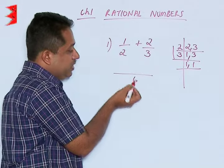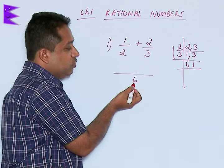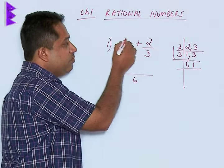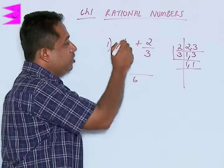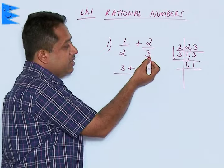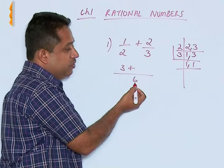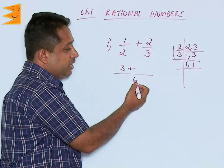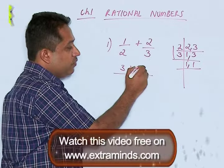Now we see how many times 2 goes in 6. 2 goes 3 times and that number has to be multiplied by the numerator. So 3 into 1, we are going to get 3 plus. The number here is 3, we will see how many times it is going in 6. So 3 goes 2 times, so 2 multiplied by 2, we are going to get 4.